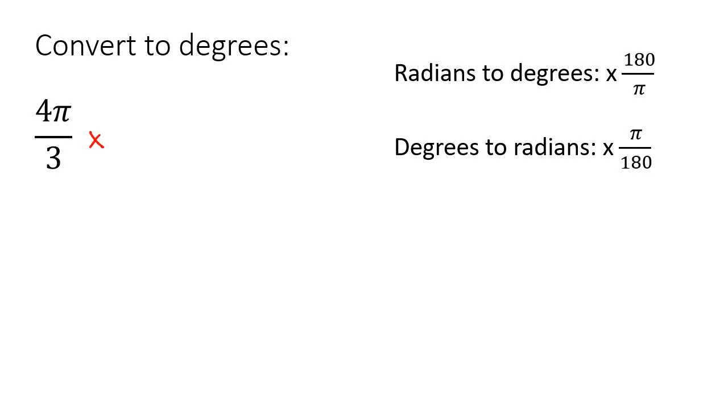Here, once again, going from radians to degrees, multiply by 180 over pi. Pi's cancel. Multiply. So at the top, you'd have 4 multiplied by 180. Yes, you can also do some cancelling here if you wanted to. There are ways of doing it. But this should give you 240 degrees.